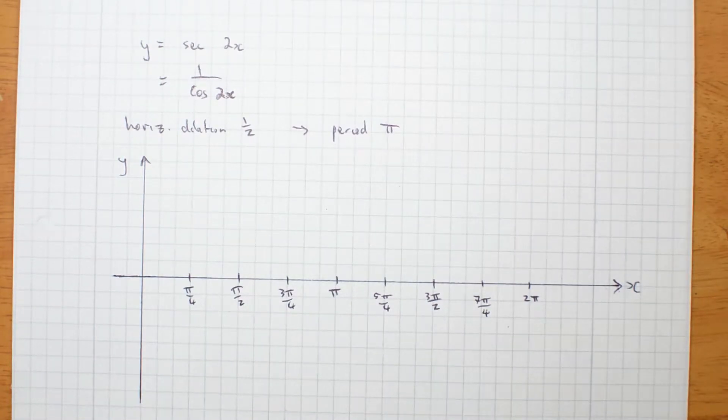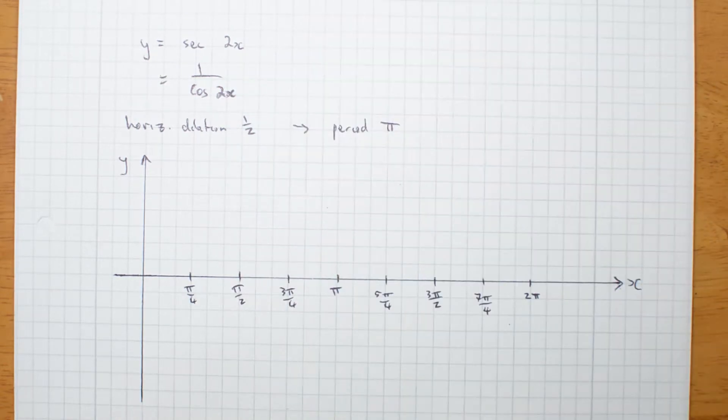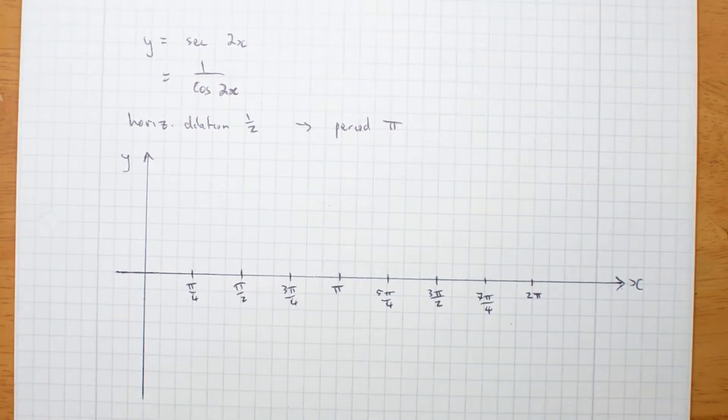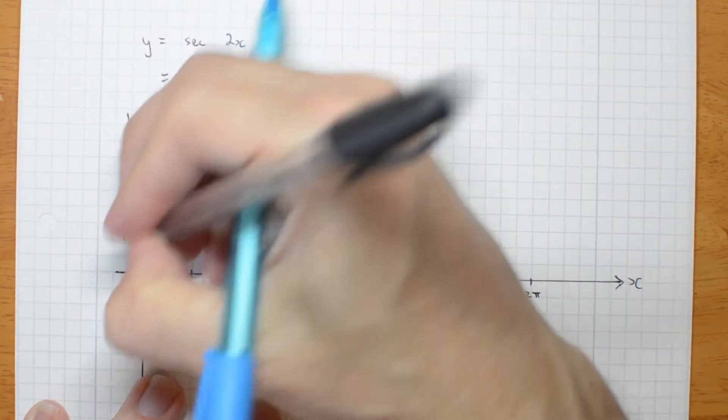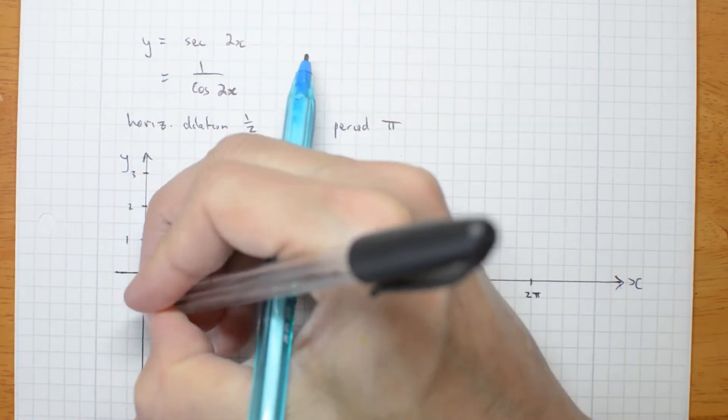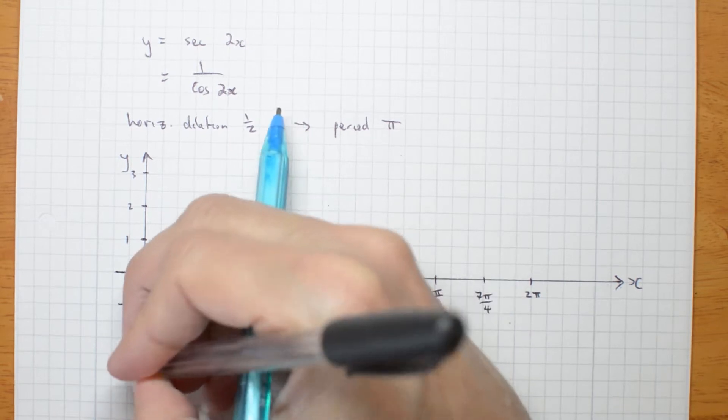OK, I'm going to start by sketching in cos 2x. You don't have to do this. I'm just doing it because it's going to make it clearer where sec is going. I need an amplitude, I need a 1 marking. So let me go 1, 2, 3, and minus 1, minus 2, minus 3.